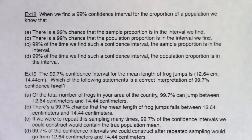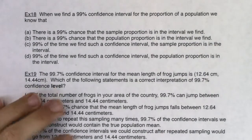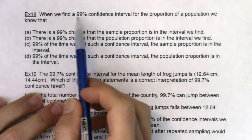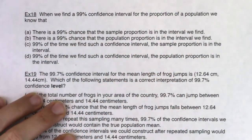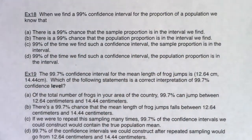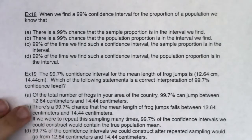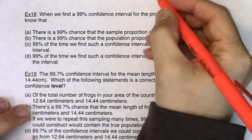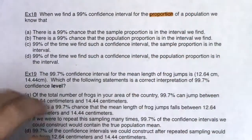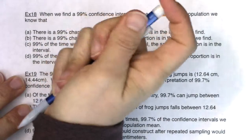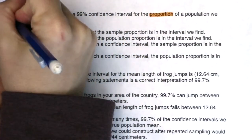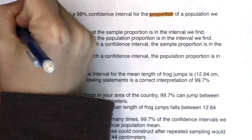As I read this, I'm going to try to really identify what land am I in and what clues are giving me that information. So when we find a 95% confidence interval for the proportion of a population — I note I'm in proportion land, so I'm going to write that in the margins, which means I'm going to use a z-star critical value.